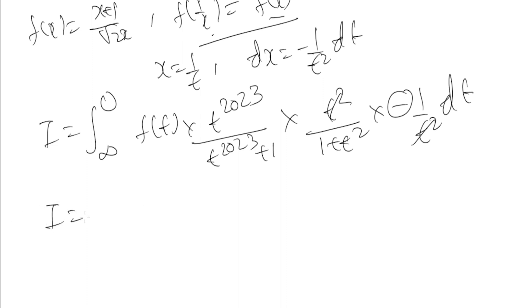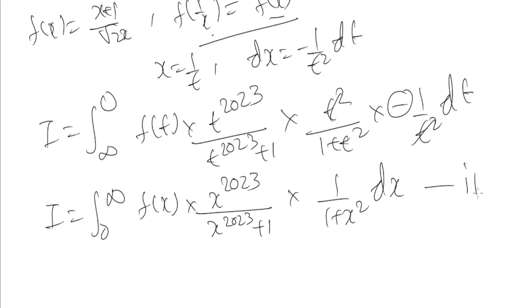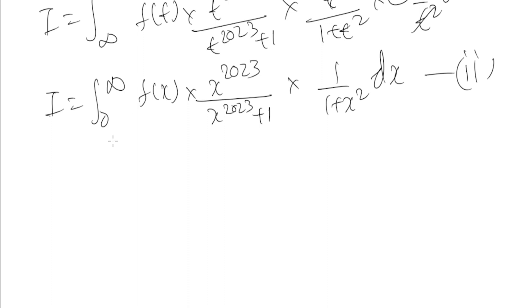We take this minus sign and change the limits: I equals integral from 0 to infinity. A change in variable doesn't affect the value of a definite integral, so we can write it in terms of x: f(x) times x^2023 over (x^2023 + 1) times 1 over (1 + x²) dx. Consider this as the second equation and the original as the first equation.